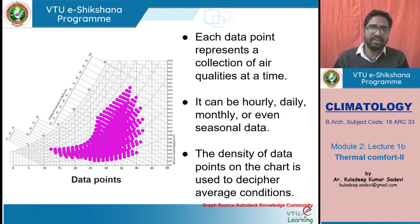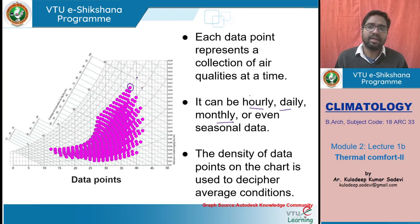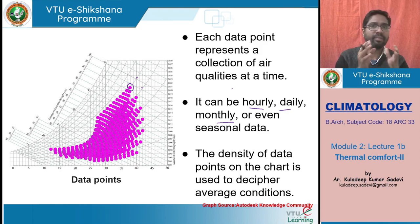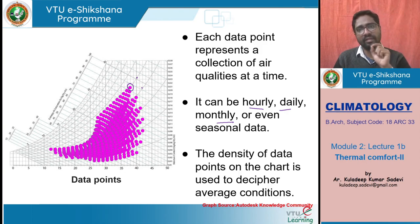Each data point represents the collection of air quality at a given time. At a given time when I measure temperature, that reading is one dot in this psychrometric chart. Data can be hourly, daily, monthly, or even seasonal. In module 1 you studied temperature readings as monthly average, monthly mean, monthly max, mean max, and mean minimum — five different readings for monthly or annual time spans. Whatever reading you get, that average can be plotted in this chart. At a given point of time, when you plot that information, it will be one dot in this psychrometric chart.